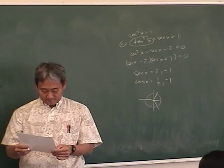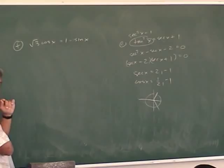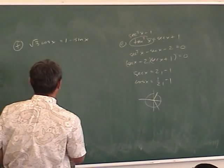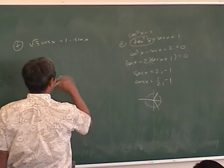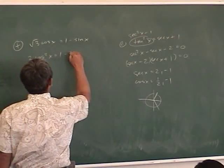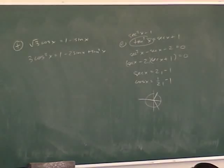Problem 4F. Why do we square both sides? Not because of the radical — it's because we don't have identities for sine and cosine directly, but we do have identities for sine squared and cosine squared. The drawback is you must check for extraneous solutions. When you square both sides, square the entire side — not term by term. You get 3 cosine squared x equals 1 minus 2 sine x plus sine squared x.